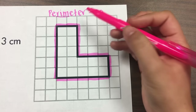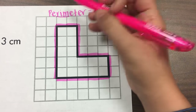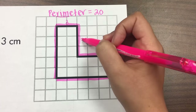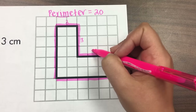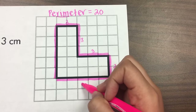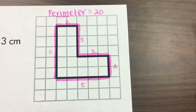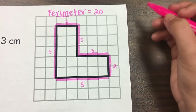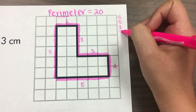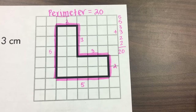You can also count each side. So for example, here I have two, here I have three, here I have three again, here I have two, here I have five, and here I have five. And once you have all your numbers, you can also add them. So five plus five plus three plus three plus two plus two should add up to 20 also.